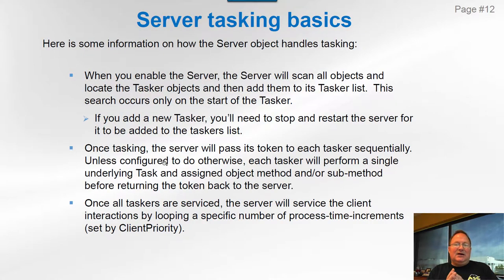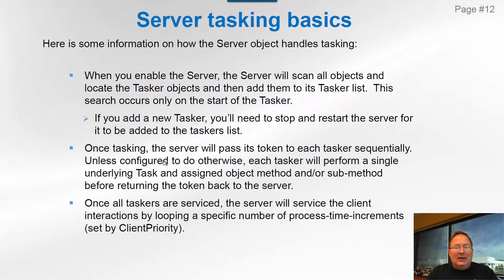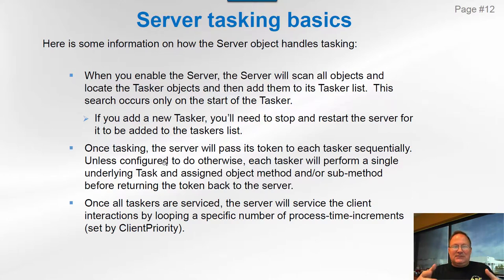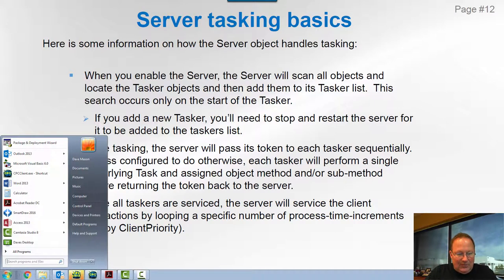Server tasking basics: when you enable the server, it scans all objects within the configuration, locates all the tasker objects, and assembles them into a list — remembering where all the taskers are. From that point on, it starts token passing to all taskers and to client interactions. This means that if you add a tasker object to your configuration while the server is on, it won't be recognized because that new tasker won't be in the list. So if you add a tasker and want it to start tasking, you have to turn the server off and back on.